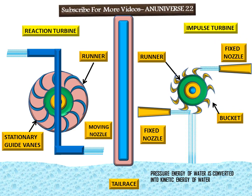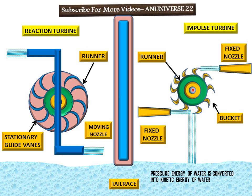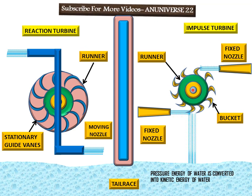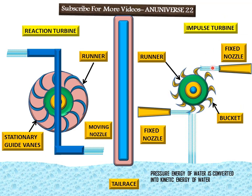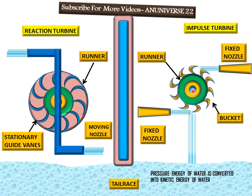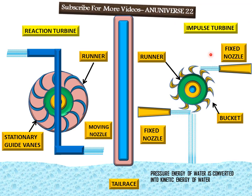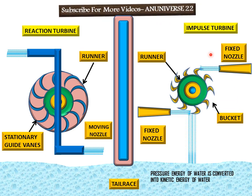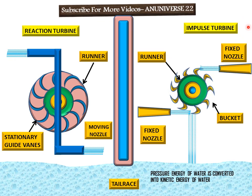The shaft of the runner is coupled with the shaft of the generator. The hydraulic energy of water is converted into mechanical energy, and as the runner rotates, the generator shaft also rotates, producing electricity.